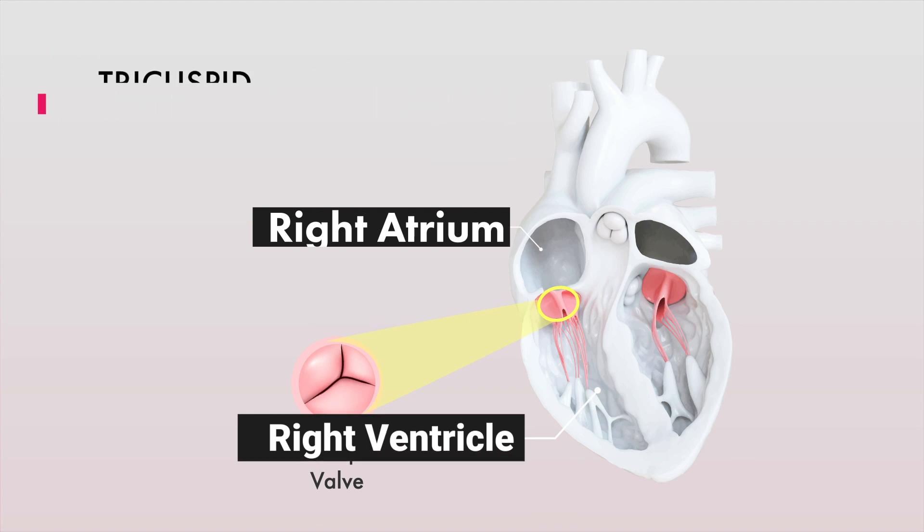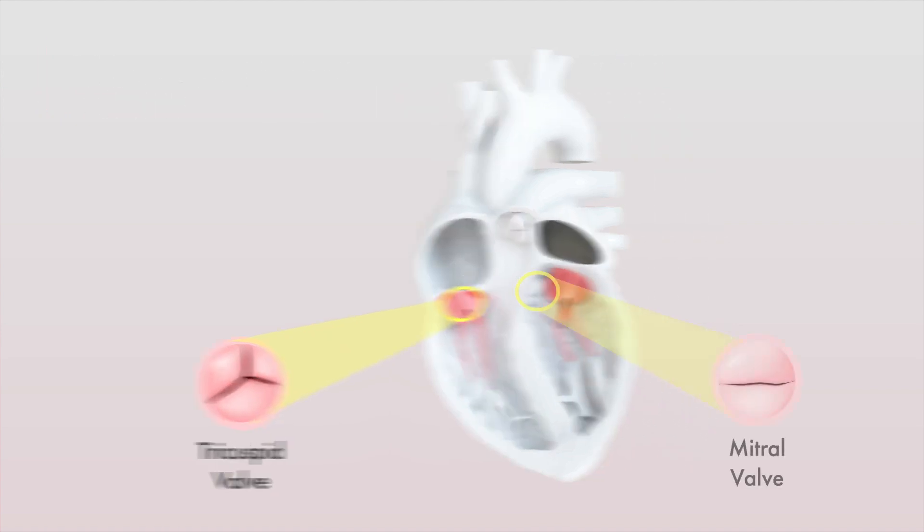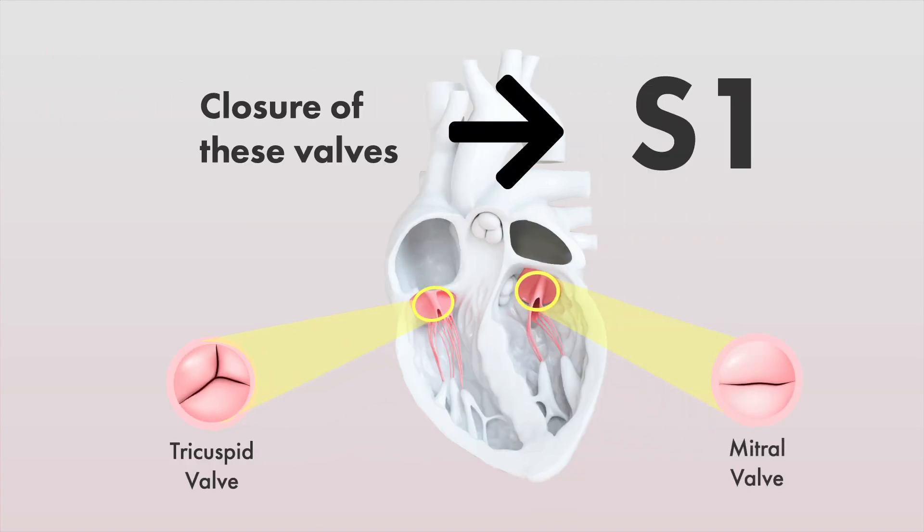These atrioventricular valves close during ventricular systole, preventing the backflow of blood into the atria, resulting in the S1 heart sound.